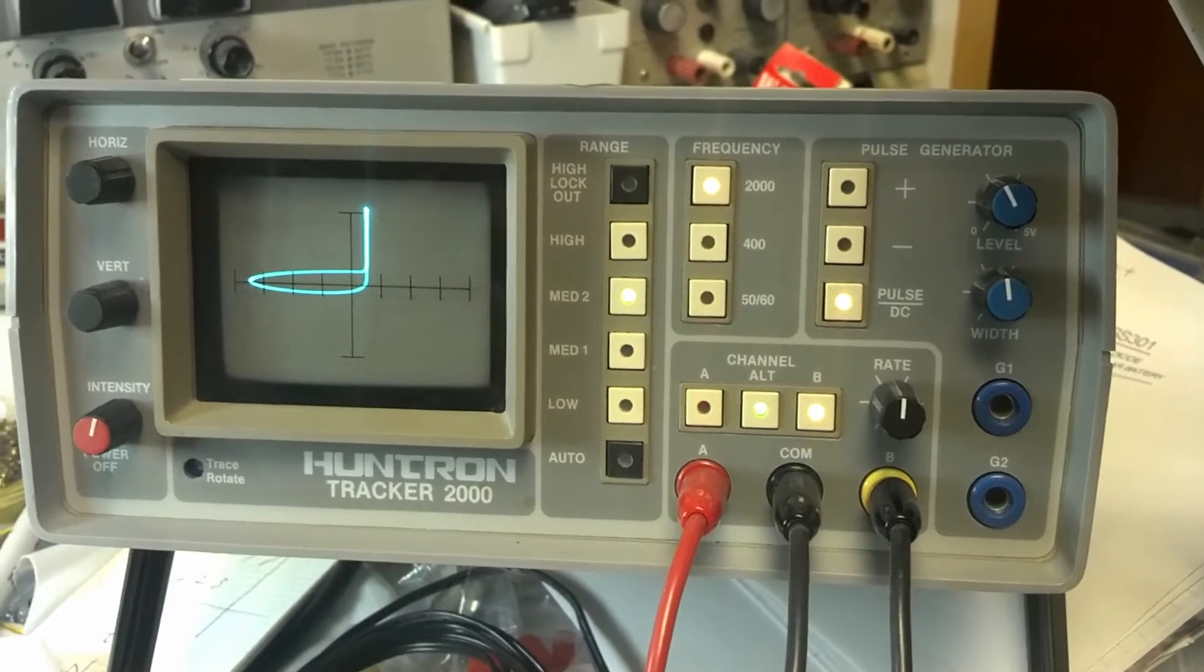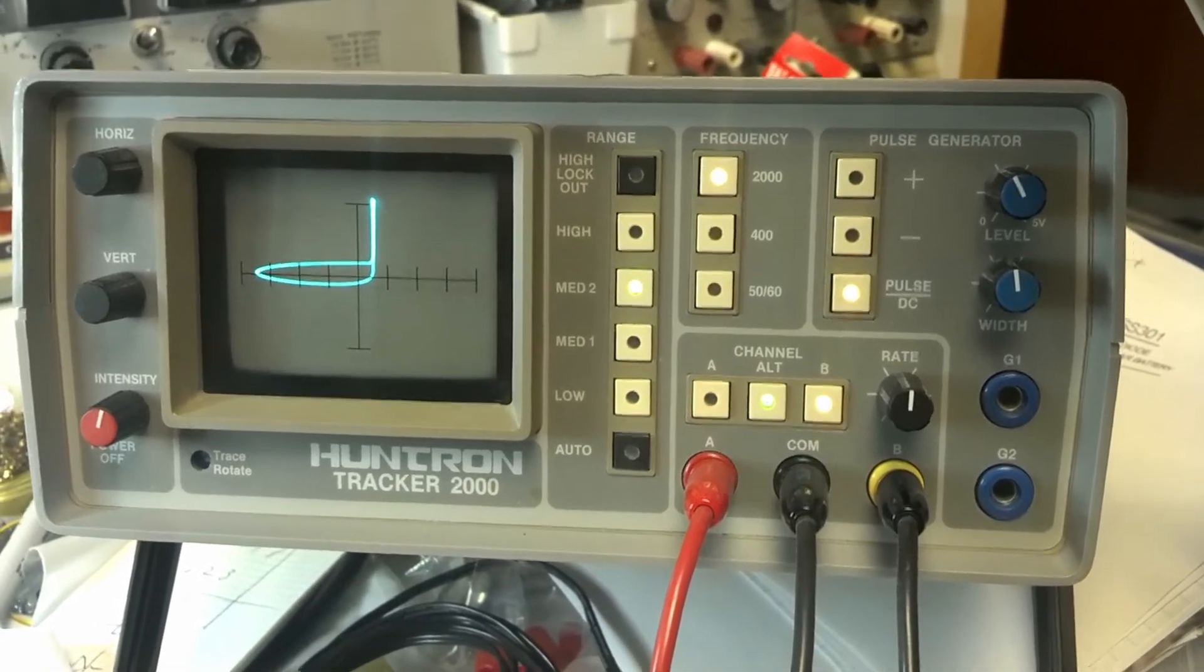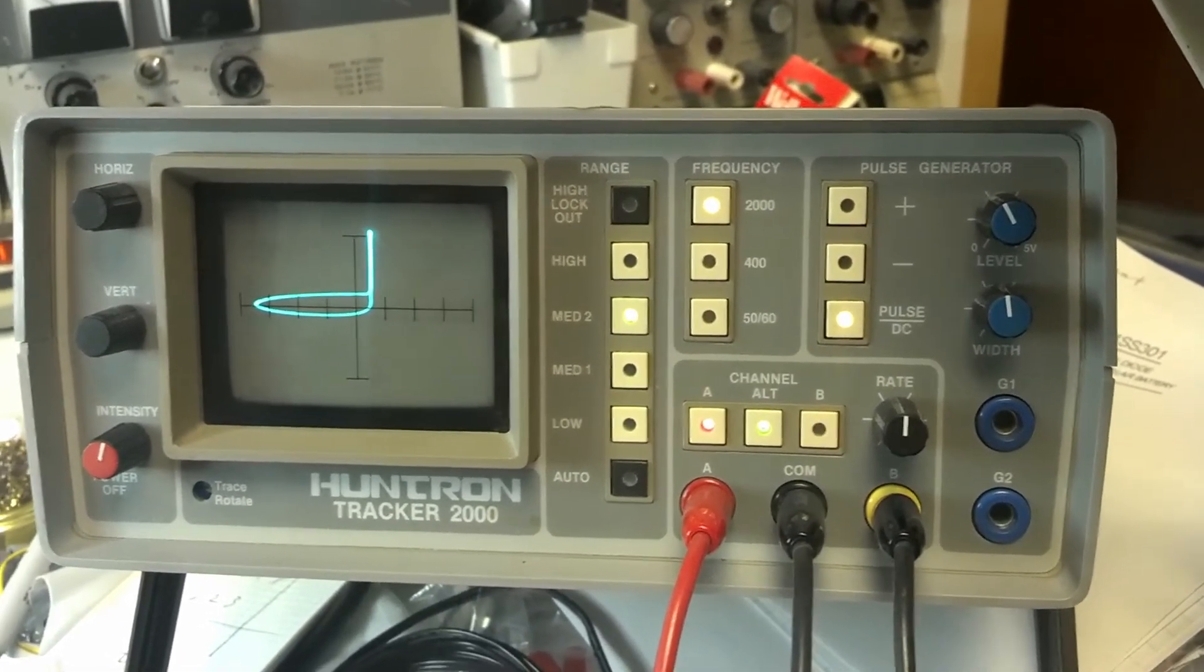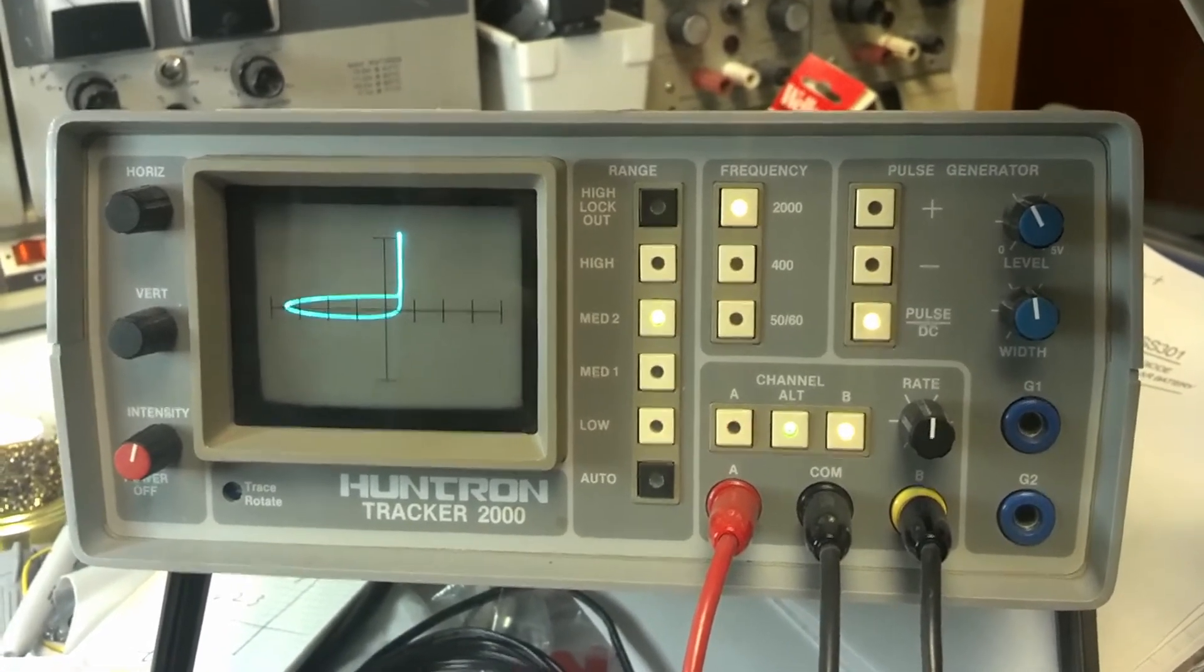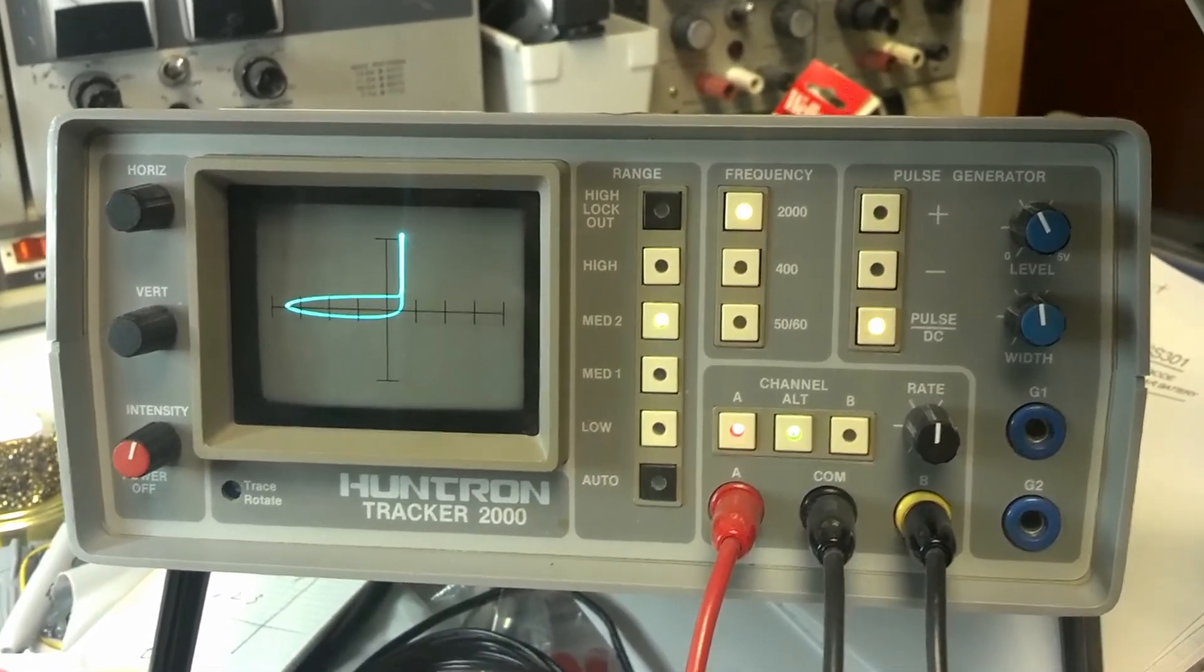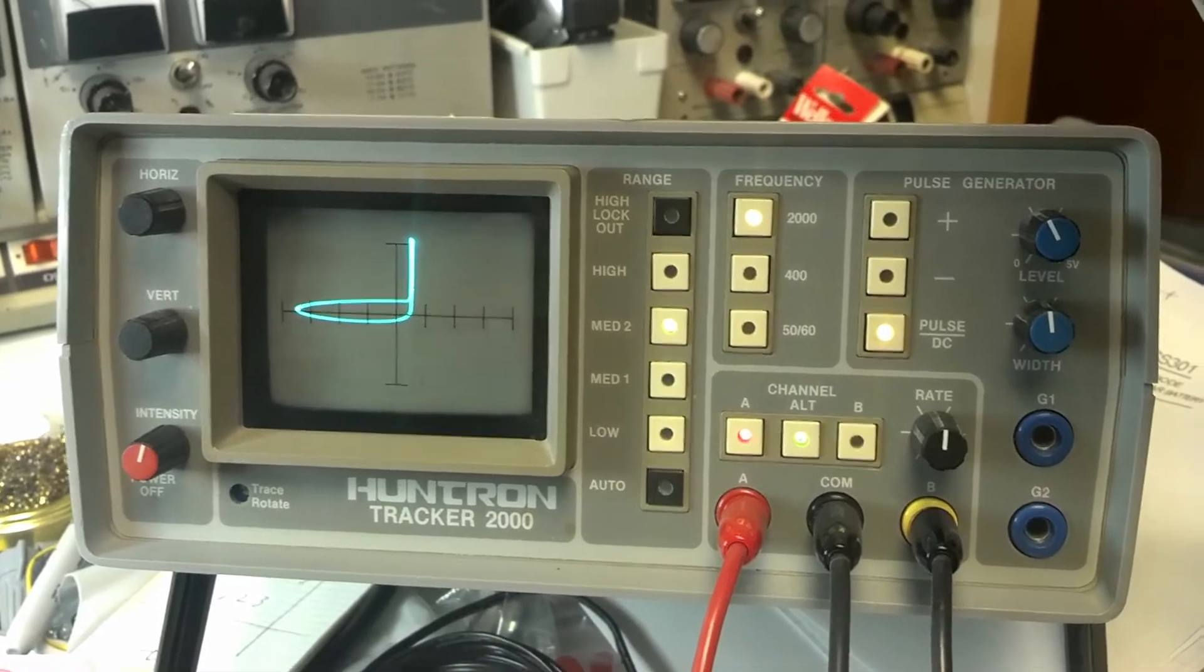Okay, we've changed diodes D6002 through 6005, and this is the comparator. The signals that we're seeing now are exactly the same on the two compared circuits.